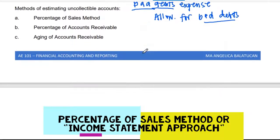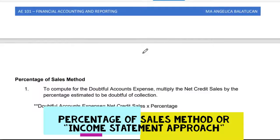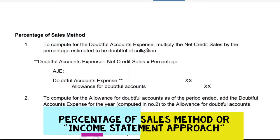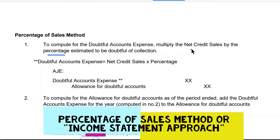The first method is the percentage of sales method. To compute the doubtful accounts expense, you multiply the net credit sales by the percentage estimated to be doubtful of collection. That's why it's called the percentage of sales method — because you multiply the percentage against the net credit sales.